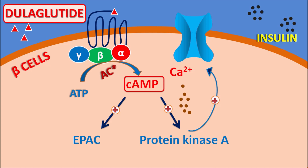Similarly, Dulaglutide can also reduce glucagon release by acting on the alpha cells. All these actions, along with delayed gastric emptying, reduce glucose levels. Since this drug is long-acting, it can be given once weekly to control glucose levels.